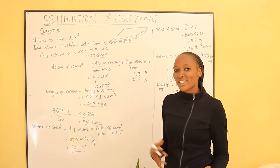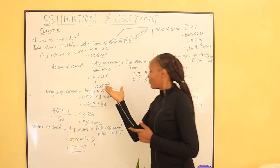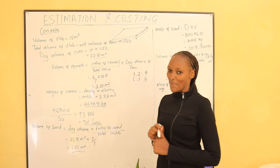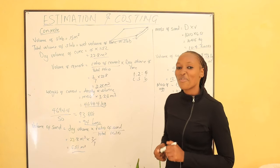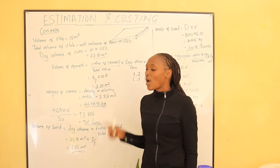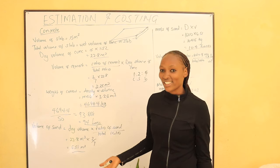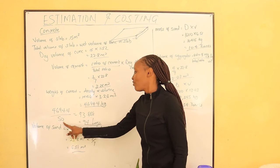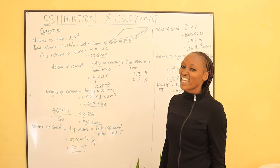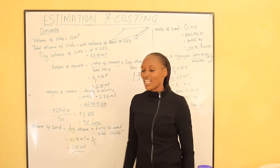When calculating the volume of cement, it shall be 1 over 7 times the total dry volume: 1 over 7 times 22.8, giving us 3.26 cubic meters. We then calculate the weight of cement: mass equals density times volume. The density of cement is 1440 kilograms per cubic meter. 1440 times 3.26 gives us the total kilograms of cement — 4694 kg. One bag of cement is 50 kilograms, so 4694 divided by 50 gives 93.88 bags. Since we can't buy fractional bags, we shall buy 94 bags.